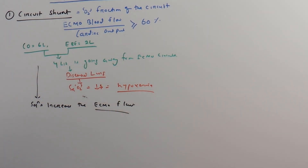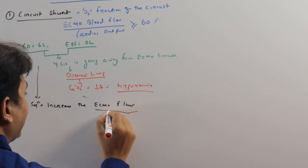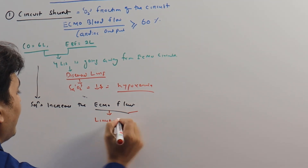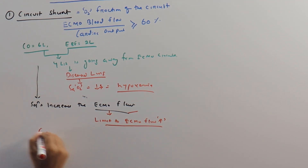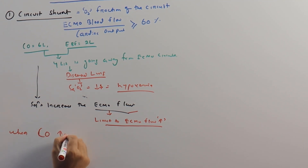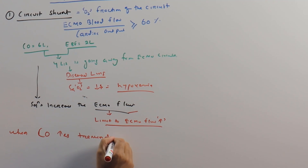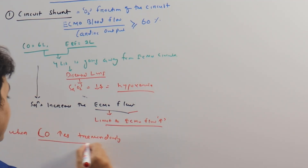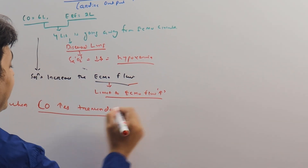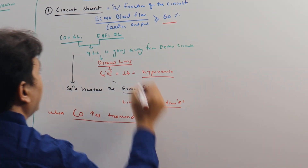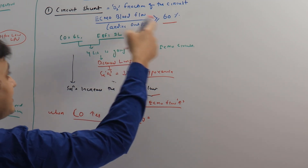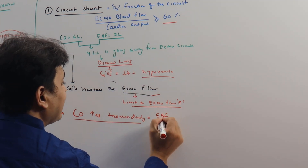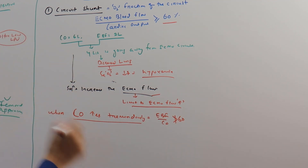The simple solution here is to increase the ECMO flow — for example, from 2 liters to 4 liters. However, there is a limit to ECMO flow increase. When cardiac output increases tremendously, for example when the patient is septic or has high-grade fever causing hyperdynamic circulation, the 60 percent ratio cannot be maintained because ECMO blood flow is limited while cardiac output has increased to a larger amount.